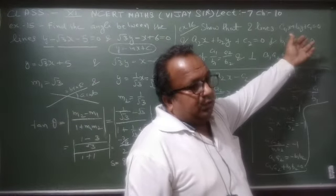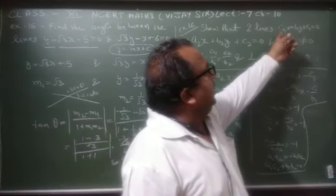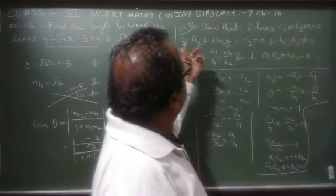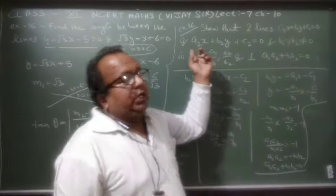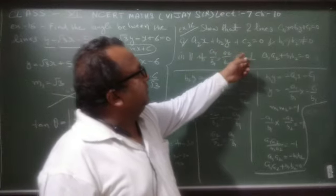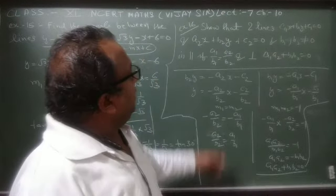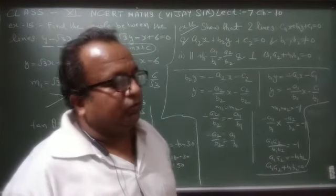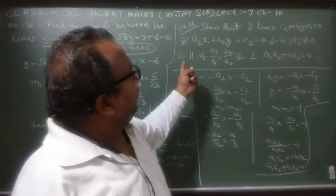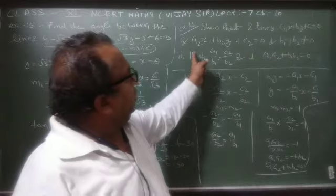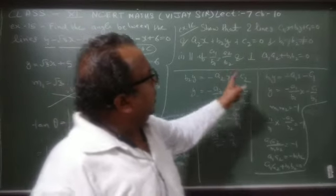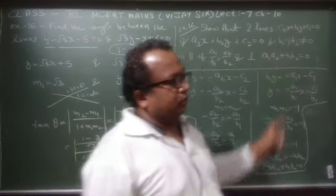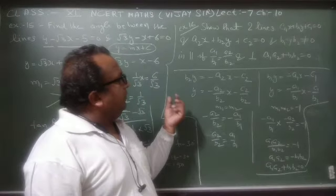Example 16: दो lines की general equations दी हैं — a1x + b1y + c1 = 0 और a2x + b2y + c2 = 0, जहाँ b1 और b2 दोनों 0 के equal नहीं हैं। हमने prove करना है: lines parallel होंगी तो कौनसी condition होगी, और lines perpendicular होंगी तो कौनसी condition होगी।